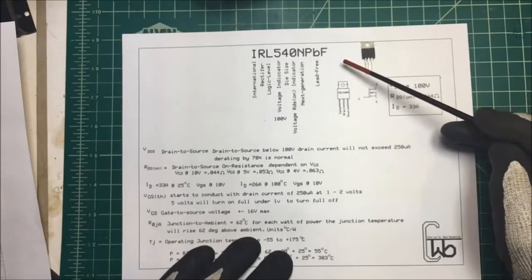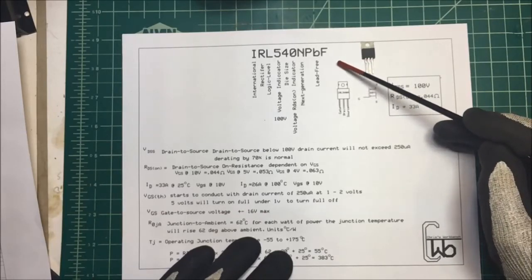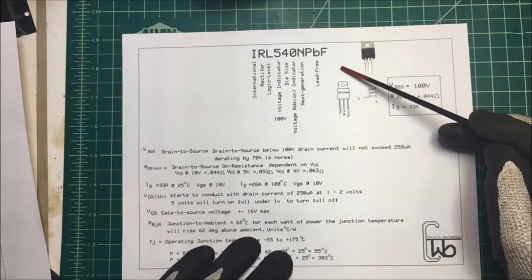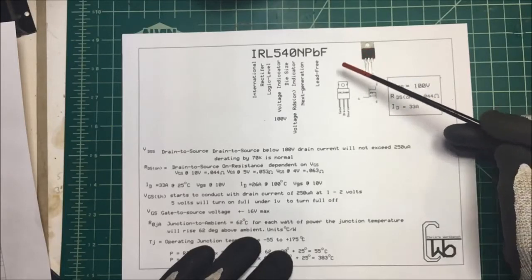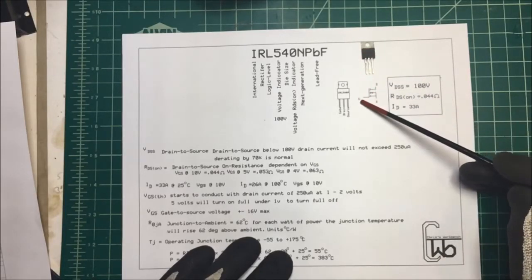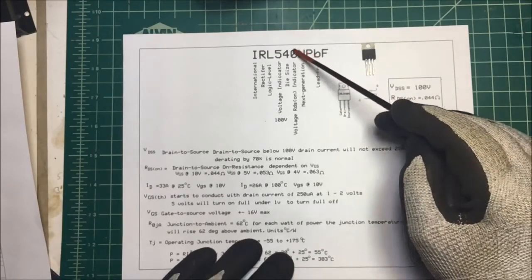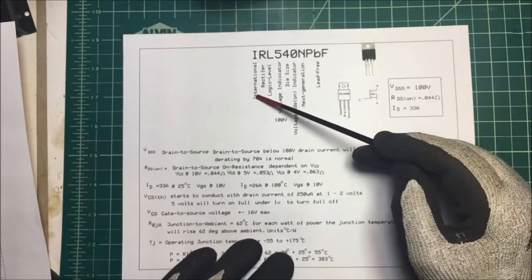Let's take a look at this MOSFET. I want to see if it's going to work for my application. I happen to have this one and I want to run a three amp load at 24 volts and I want to do it with a gate voltage of five volts. We'll take a look at this.